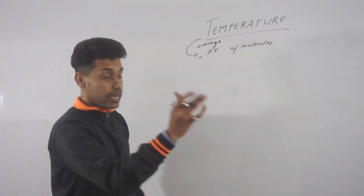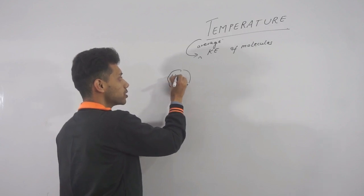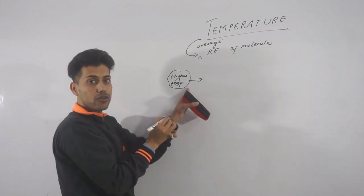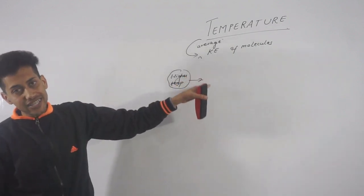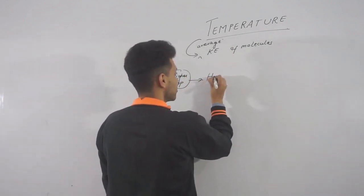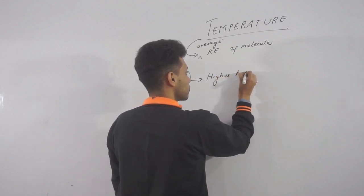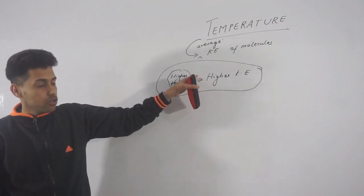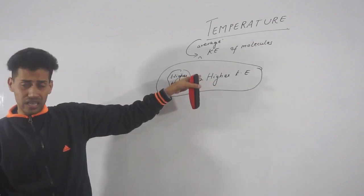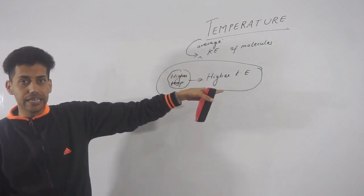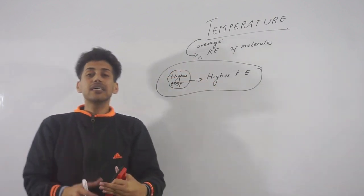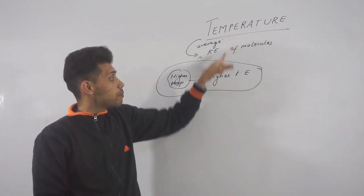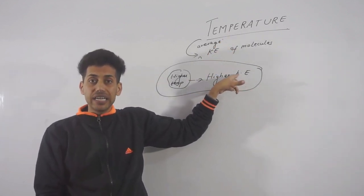So if you say that a body has higher temperature, that simply means the molecules of the body has higher kinetic energy. Now I am talking about kinetic energy, but you might have observed I am not saying anything like heat, heat energy - only kinetic energy. Yes, this is a different thing that heat energy changes into kinetic energy. But truth is, temperature is a measurement of kinetic energy.